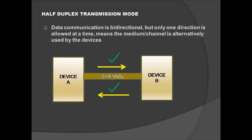Next is duplex transmission mode. Under half duplex, data communication is bi-directional — unlike simplex which is unidirectional — but only one direction is allowed at a time. The channel is alternatively used by both devices. If device A is transmitting, device B cannot transmit at the same time; it will be in receiving mode only. Similarly, when device B is transmitting, device A must be in receiving mode.